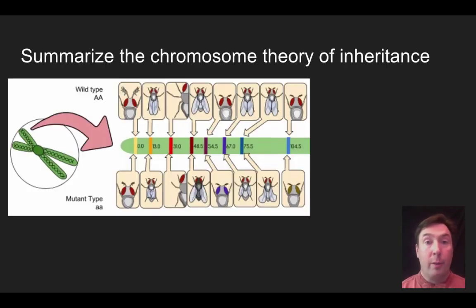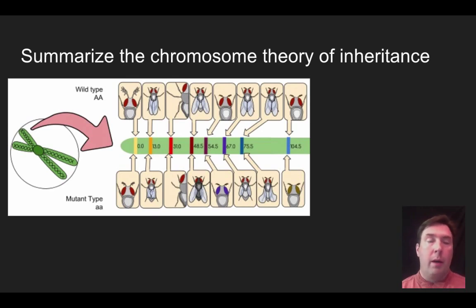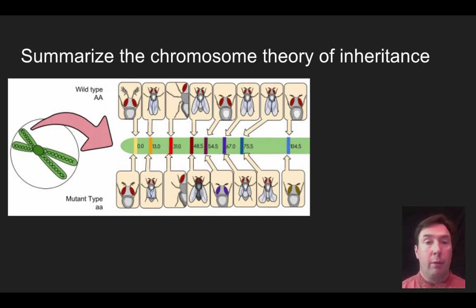Our chromosome theory of inheritance basically says that specific genetic material is on chromosomes, and that's where we're going to find the given alleles that we're looking for. We're showing fruit flies here because fruit flies are one of the model organisms that were very crucial in the discovery of the chromosome theory of inheritance. We will look at fruit flies in a few different instances throughout the year.